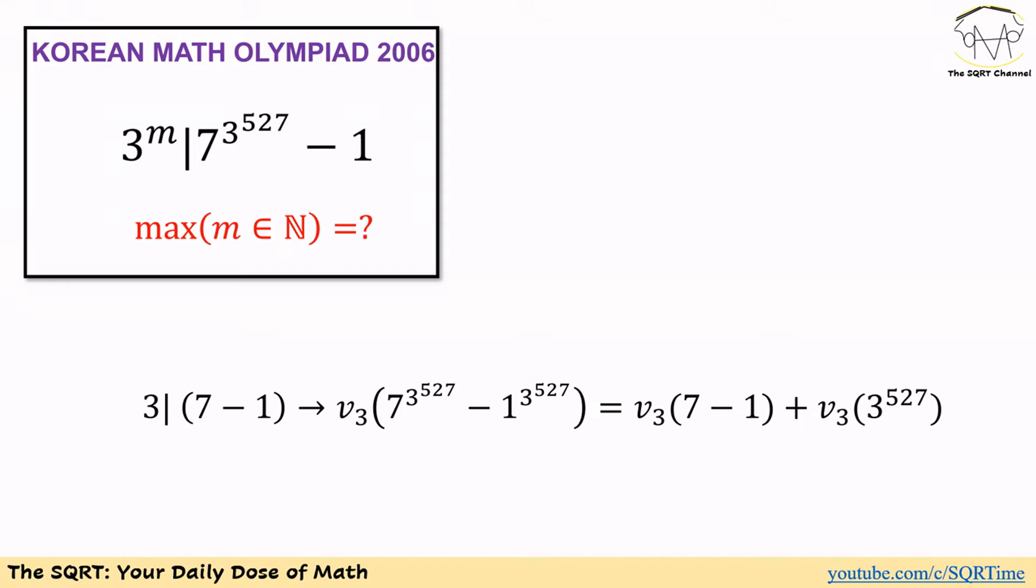Now let's review the problem again. We're looking to find the maximum m that satisfies: 3 to the power of m divides 7 to the power of 3 to the power of 527 minus 1. Since 3 divides 7 minus 1, we can say the maximum power of 3 that divides 7 to the power of 3 to the power of 527 minus 1 equals the maximum power of 3 that divides 7 minus 1, plus the maximum power of 3 that divides 3 to the power of 527. This is based on the LTE lemma.